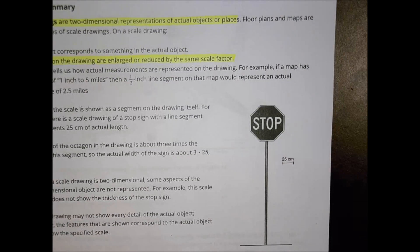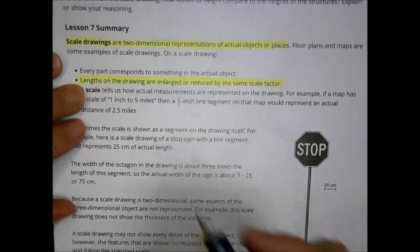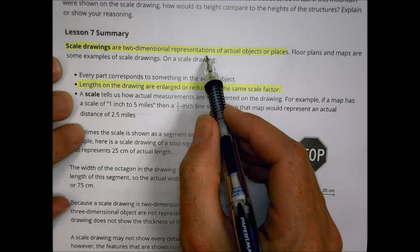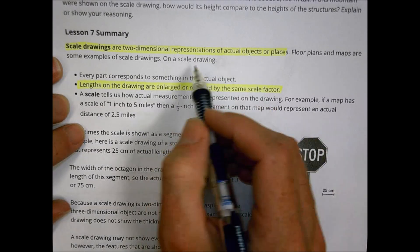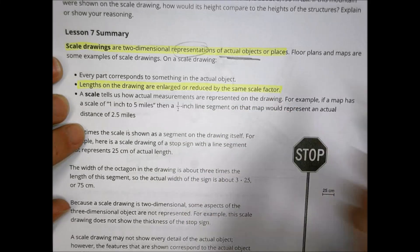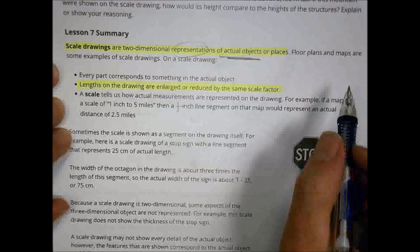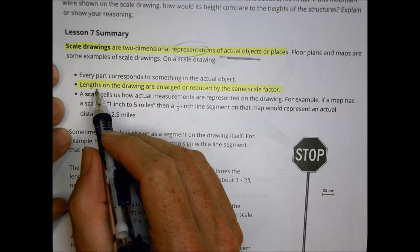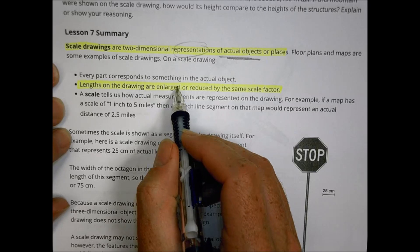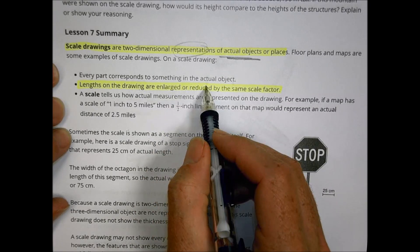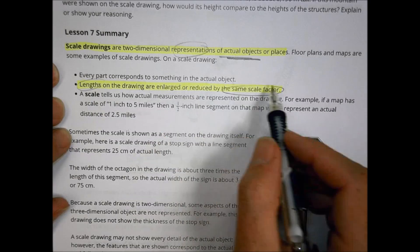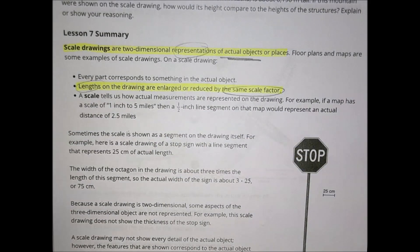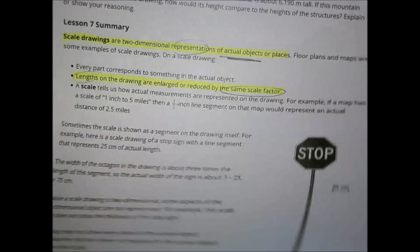As a summary of today's lesson, the point is that scale drawings are two-dimensional representations of actual objects or places — they represent real things. When we do that, the lengths in our drawings are either enlarged or reduced by the same scale factor. So we're working with lengths and scale factors, and that's what's happening in this lesson today.